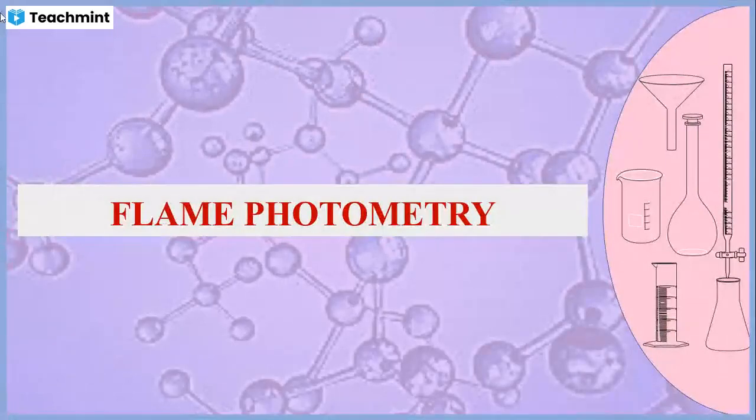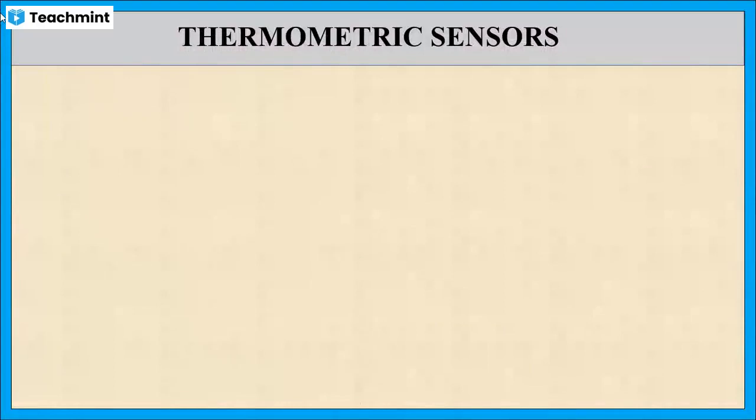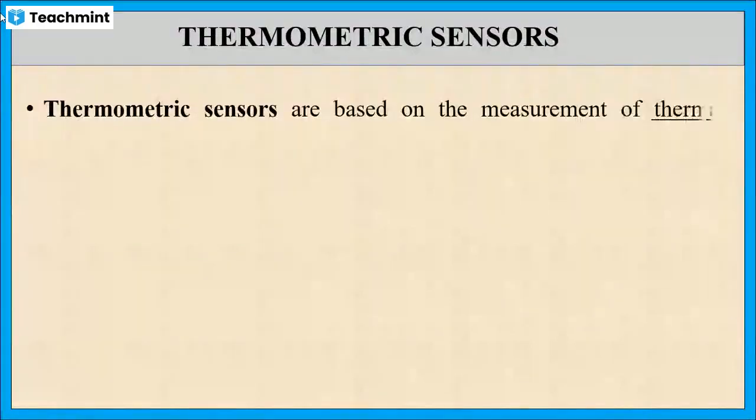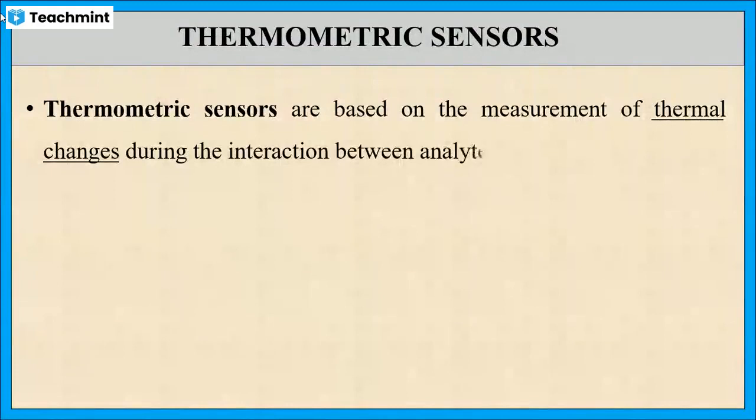In this session I will explain about flame photometry. Flame photometry is a type of thermometric sensor. Thermometric sensor means the measurement of thermal changes like temperature changes or flame emission during the interaction between the analyte and the receptor.